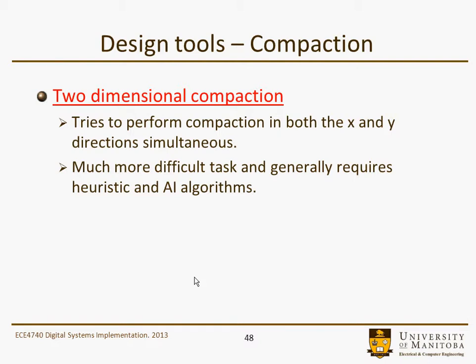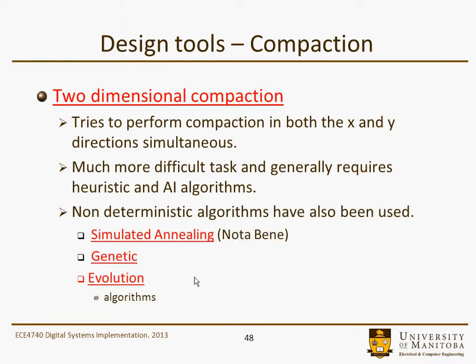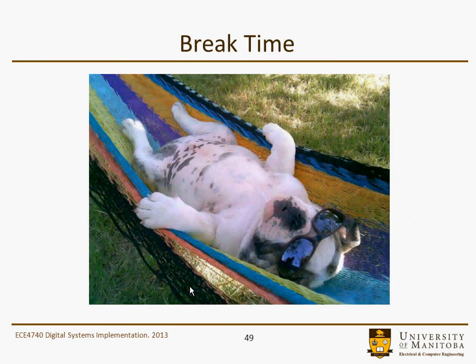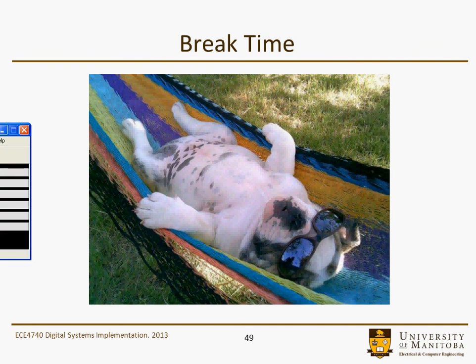Two-dimensional compaction tries to compact in both the x and y directions simultaneously. It's a much more computationally difficult task and generally requires heuristics or AI-type algorithms. We'll briefly look at a couple of these non-deterministic algorithms, with simulated annealing being the most important, along with a couple more to be mentioned in this section.